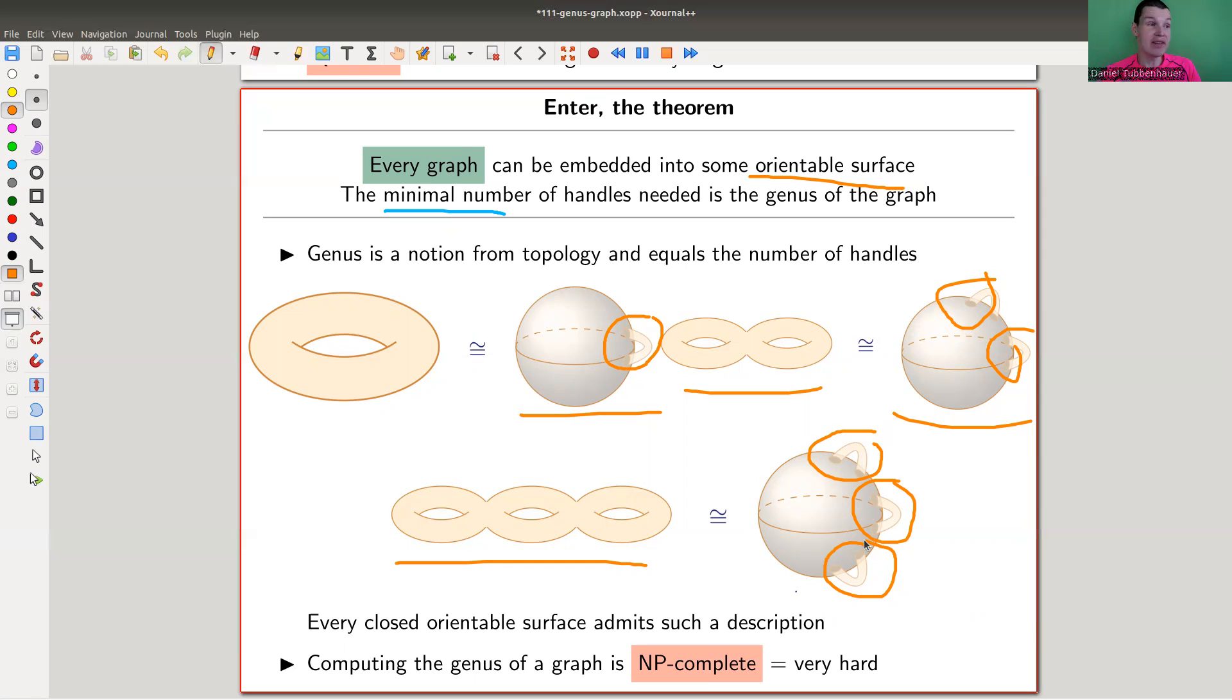But we can do something to at least prove that theorem. Let me prove that theorem for you because this is not quite obvious. A general graph, why should it embed into something? A general graph could be arbitrarily complicated - think of a general graph with a lot of edges that intersect crazily - and you can still do it. Here's how it goes. General graph in this video means finite, and that's what I'm going to use. Here's the proof that every graph goes onto one of those surfaces.